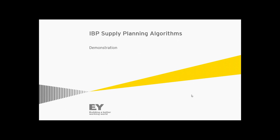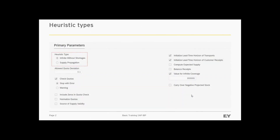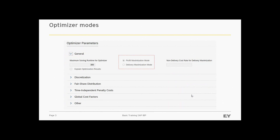This video is provided to help you in understanding and selecting the IBP supply planning algorithm that fits best to your business requirements. There are two ways of generating supply plans in IBP: heuristic and optimizer. Heuristic is a calculation of needed supplies taking into account various parameters, and optimizer is a complex mathematical procedure.